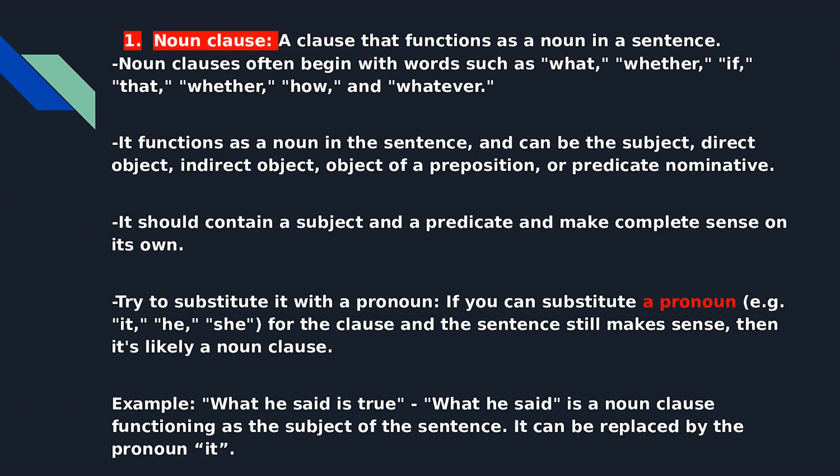Now let's start with the noun clause, which is a clause that functions as a noun in a sentence. Noun clauses often begin with words such as: what, whether, if, that, how, and whatever. A noun clause functions as a noun in the sentence and can be the subject, direct object, indirect object, object of a preposition, or predicate nominative. It should contain a subject and a predicate and make complete sense on its own.